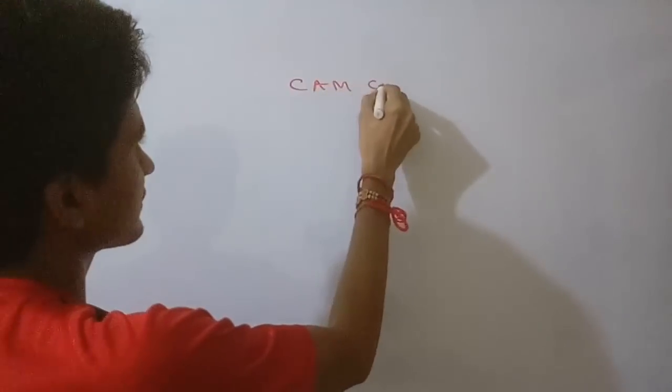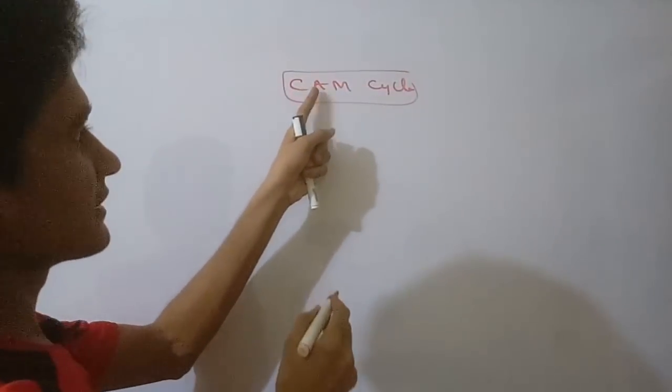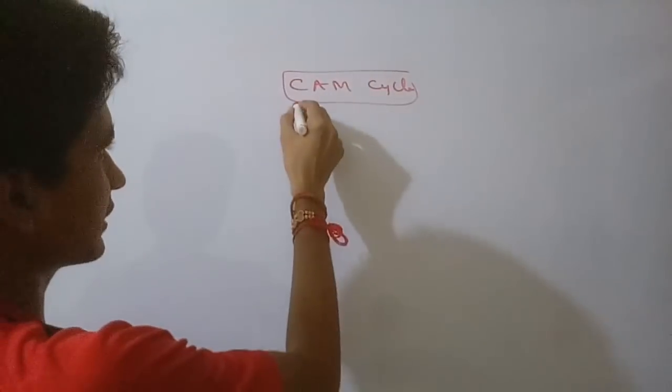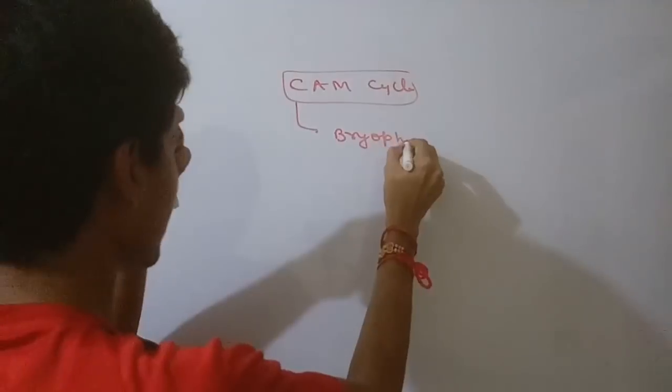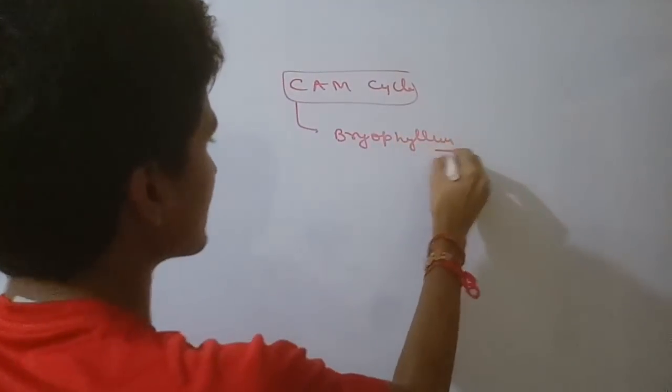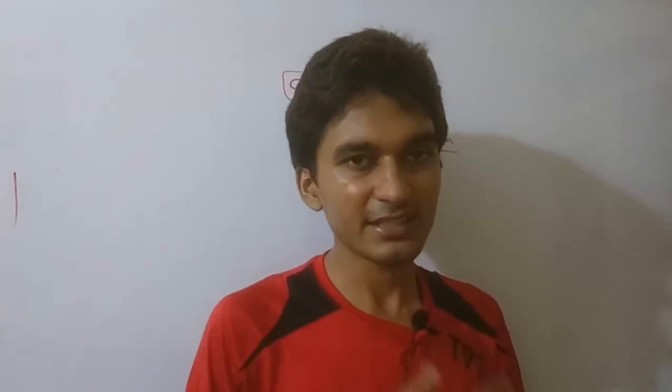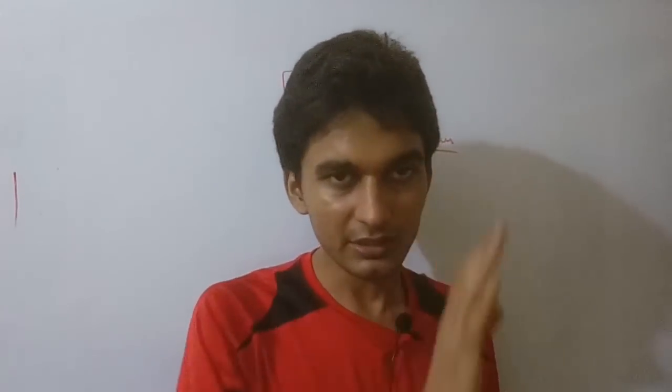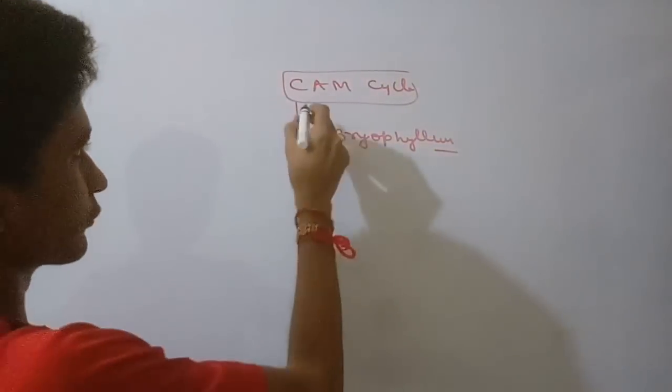So this is your CAM cycle. Full form is Crassulacean Acid Metabolism cycle. This was discovered in Bryophyllum plant. This is not in NCERT but sometimes questions have been asked from this topic, so it is very important for you.